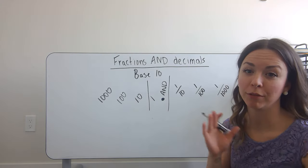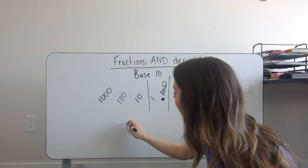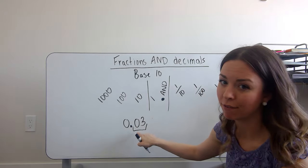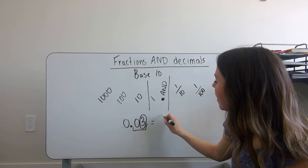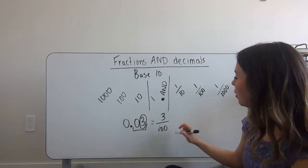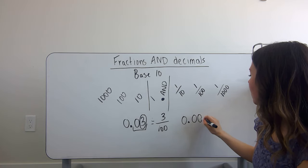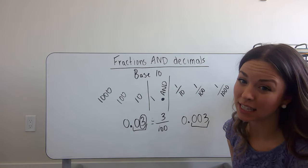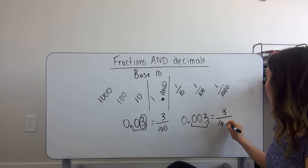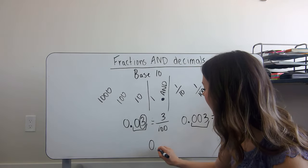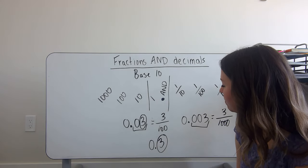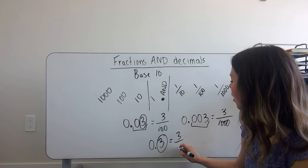Now let's try some trickier numbers when converting between fractions and decimals. If I have 0 and three hundredths, I know it's three hundredths because I said the number by itself — three — and the last place value is the hundredths place. That means three will be in the numerator and 100 in the denominator. Similarly, if I had 0 and three thousandths, that fraction is going to be three in the numerator and 1,000 in the denominator. And for 0 and three tenths, it's in the tenths place, so three with a denominator of 10.